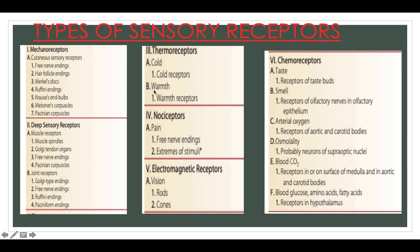Thermoreceptors include cold receptors and warmth receptors. Nociceptors for pain involve free nerve endings and extremes of stimuli. Electromagnetic receptors for vision include rods and cones. Chemoreceptors include taste receptors of taste buds; smell receptors of olfactory nerves in the olfactory epithelium; arterial oxygen receptors in the aortic and carotid bodies; osmolality receptors — probable neurons of the supraoptic nuclei; blood carbon dioxide receptors on the surface of the medulla and in aortic and carotid bodies; and receptors in the hypothalamus for blood glucose, amino acids and fatty acids.